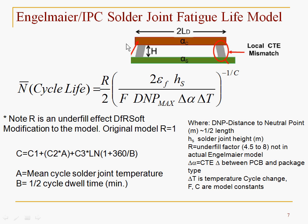The Engelmeyer IPC method is shown here. We have our chip and our FR4 board, and the difference in CTE will put a shear strain on the solder joint. Over a number of thermal cycles, this could cause cracking, especially if the strain is large. Each symbol is identified clearly in DFRSoft. Solder joint height is crucial — the larger your height, the more flexibility, so you get longer cycle life.